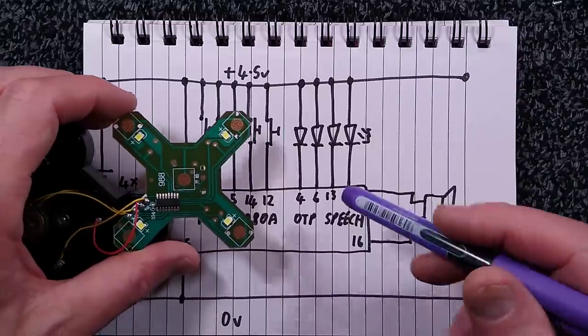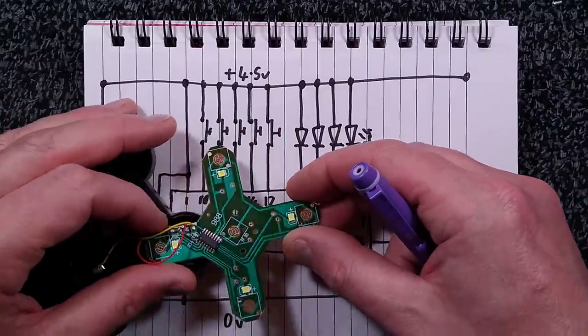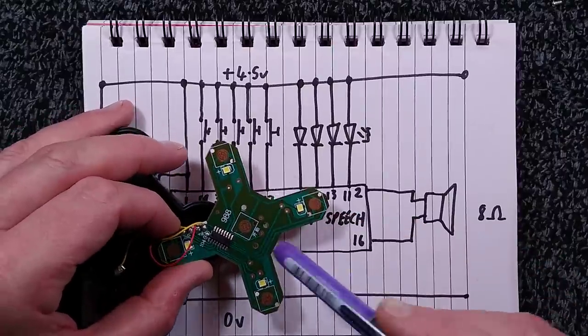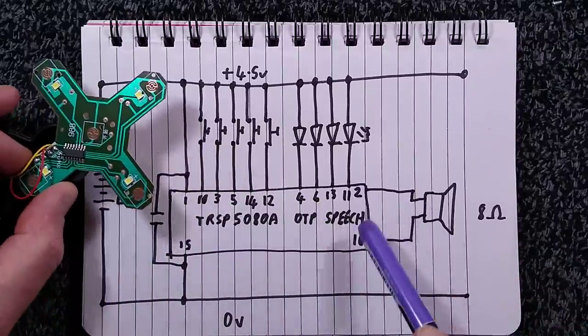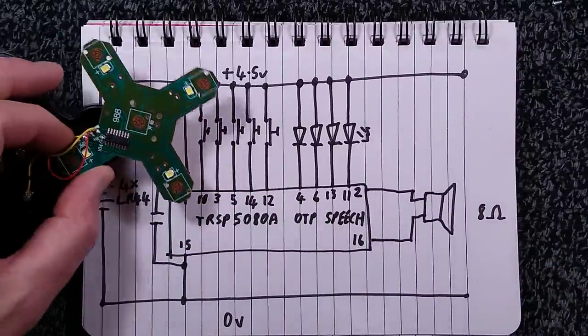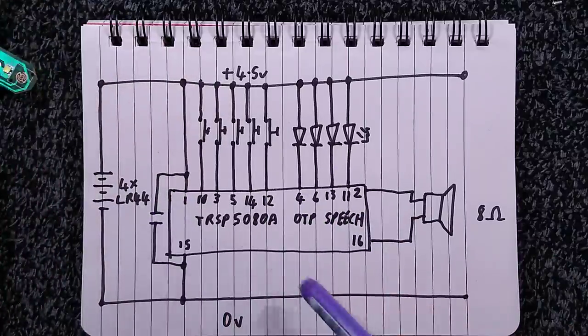It also drives LEDs directly and takes input from the buttons directly. Because it's a speech chip, it just has two dedicated outputs to a little 8-ohm speaker. The only other component, other than LEDs and switches, is the decoupling capacitor across the chip.